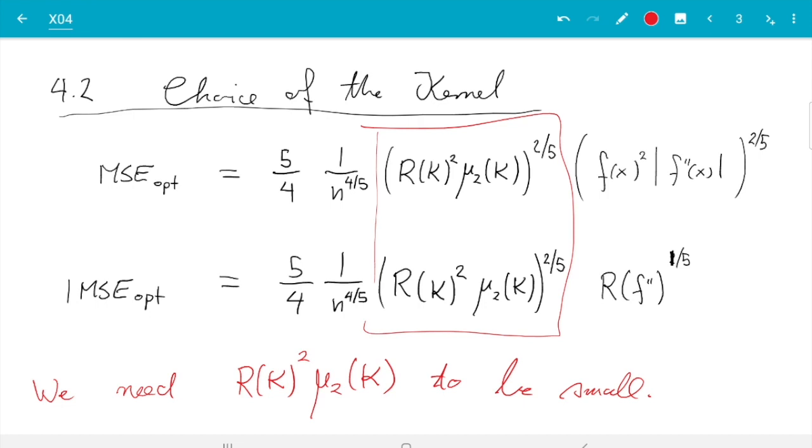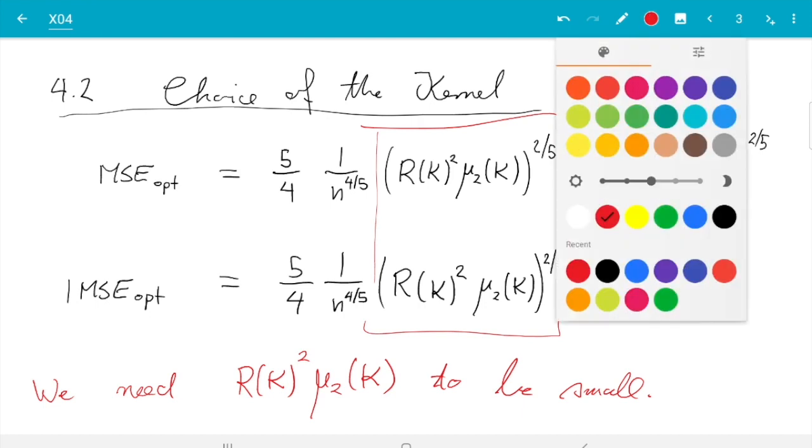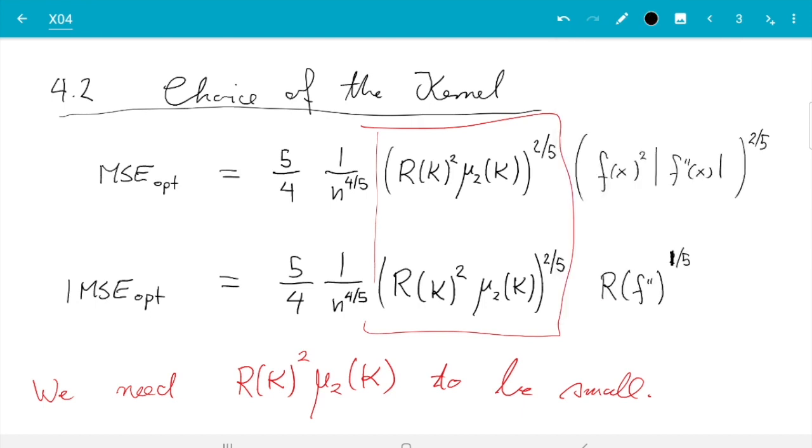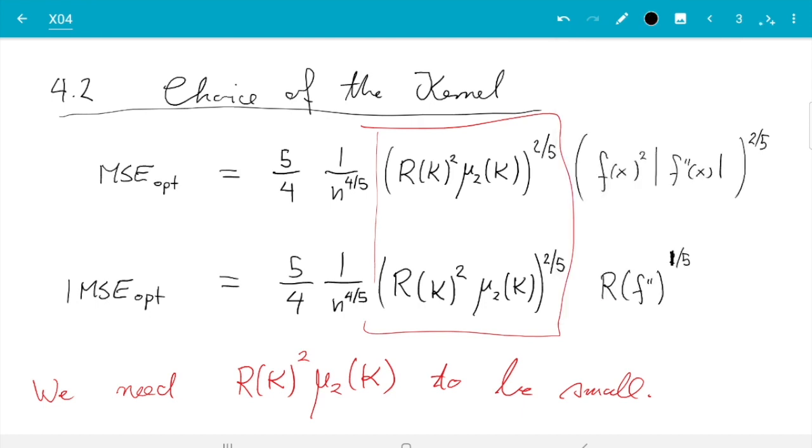And there are two things you can do. First, you can just try given kernels and work out what's the numeric value of that quantity. And then pick the kernel of the ones you have tried which has the smallest value. In the notes, I show you the uniform kernel. And here, I want to very quickly show you the triangular kernel just to see how that's done.